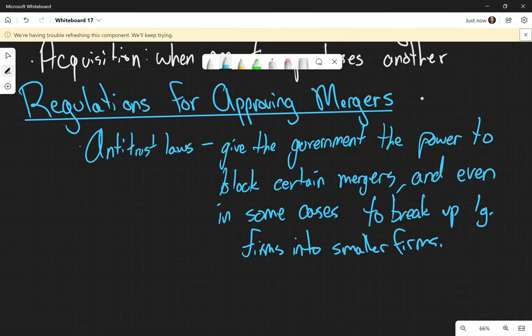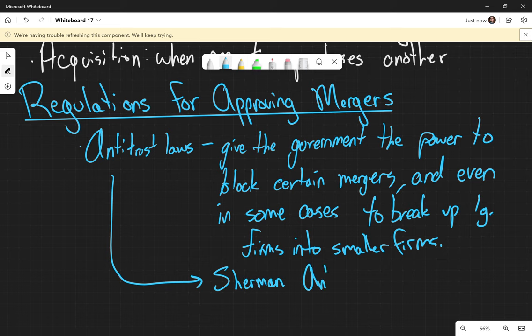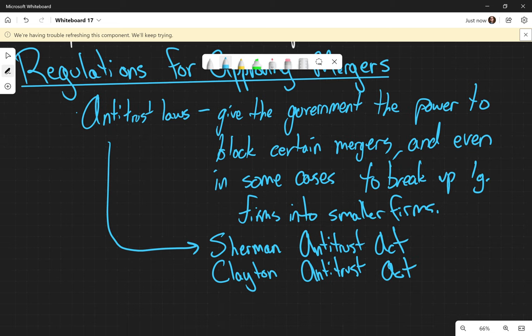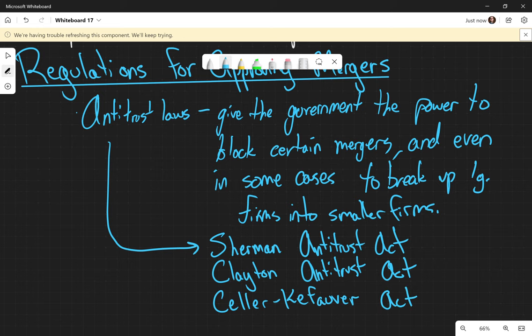There's a few historical antitrust laws that you should know. So we've got the Sherman Antitrust Act, the Clayton Antitrust Act, and the third one, not as commonly known, the Celler-Kefauver Act. So this would be research on your own. Just Wikipedia would probably be sufficient.